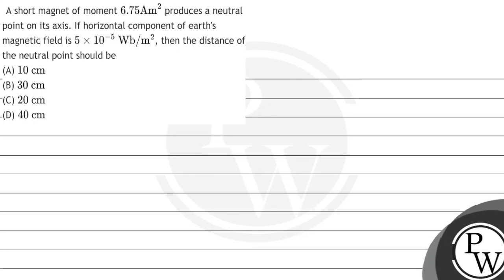Let's see the question. A short magnet of moment 6.75 ampere meter squared produces a neutral point on its axis. If the horizontal component of Earth's magnetic field is 5 × 10^-5 weber per meter squared, then the distance of the neutral point should be...